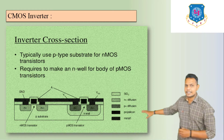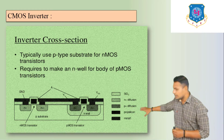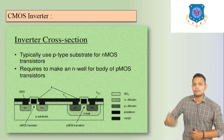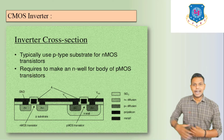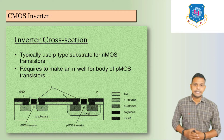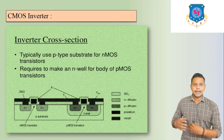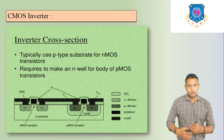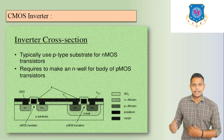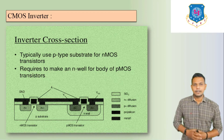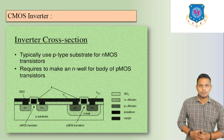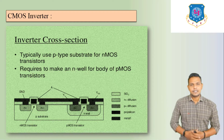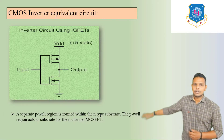Here we can see the PMOS transistor and the NMOS transistor. PMOS and NMOS — that means it is basically an N-channel E-MOSFET and a P-channel E-MOSFET. We have already discussed N-channel enhancement MOSFET and P-channel enhancement MOSFET. We are going to use three different cases in this CMOS inverter.